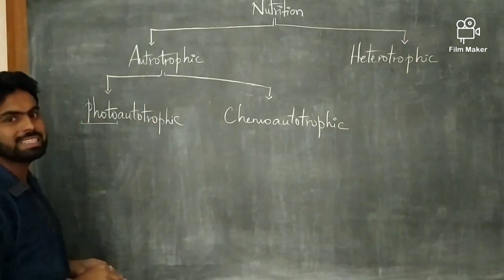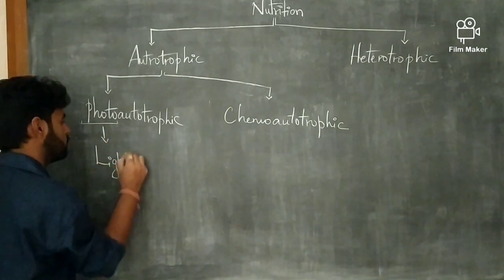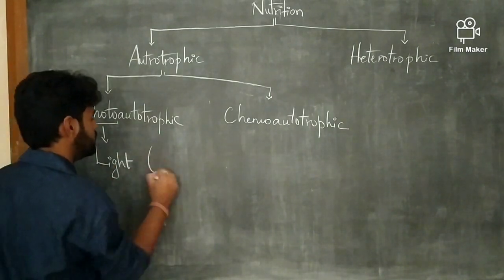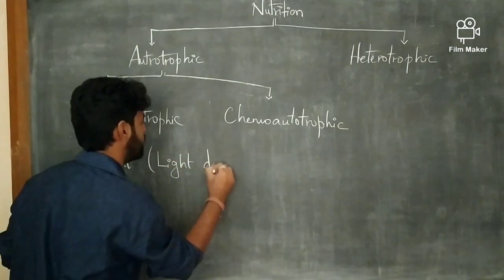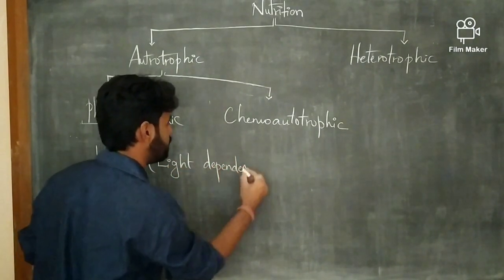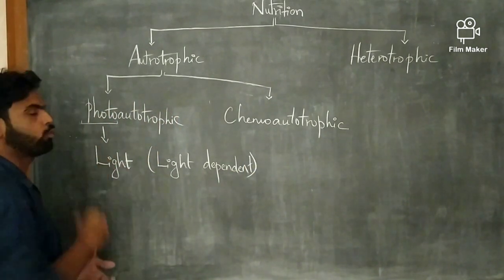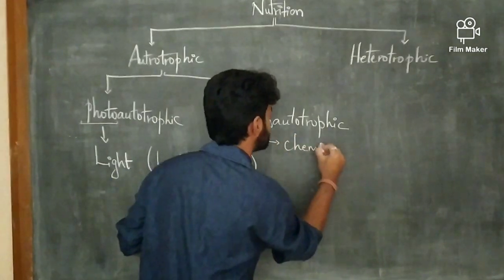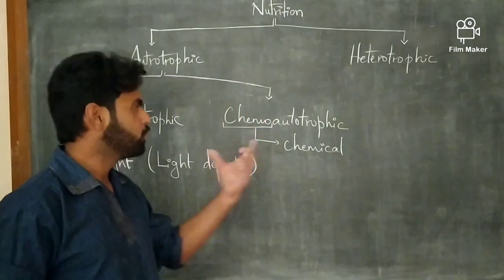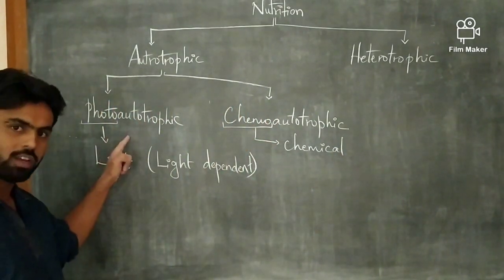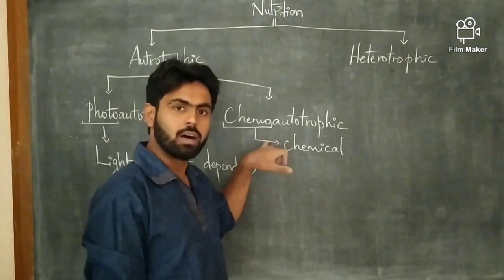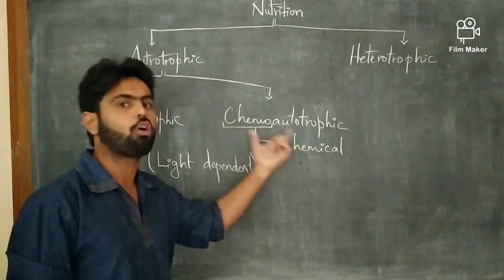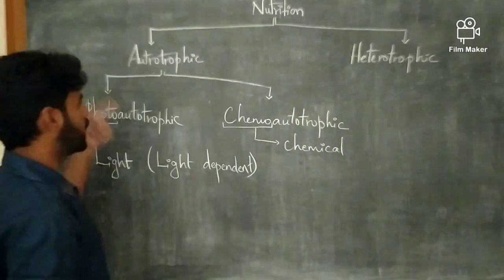The word photo means light, so phototrophic nutrition is light-dependent. The nutrition which is light-dependent is known as phototrophic mode of nutrition. Chemo indicates chemical substances, so the nutrition which depends upon chemical substances is known as chemo-autotrophic mode of nutrition. These are the two types of autotrophic nutrition.